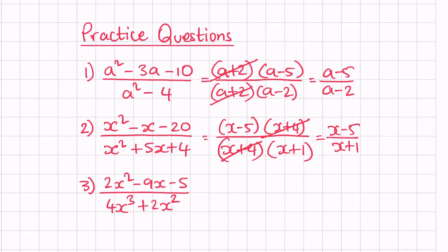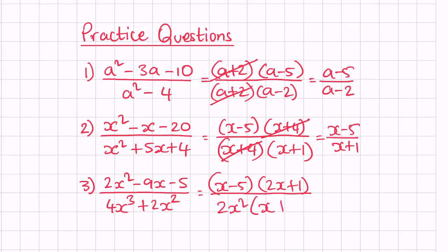Question number 3: we can see a coefficient, so let's factorize. That gives us 2x — so x minus 5 and 2x plus 1. On the denominator, 2x is a common factor. Taking out 2x: 4x cubed divided by 2x gives 2x squared, and the remaining factor is x plus something.